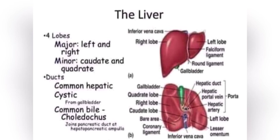The major lobes include the right and left lobes, and the minor lobes include the quadrate and caudate lobes. There are three ducts: the common hepatic duct, the cystic duct, and the common bile duct.